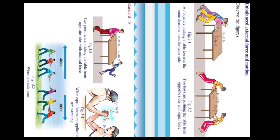Then listen to the third figure. In that, a person is pushing the table with 80 newtons, and another boy is pushing the table in the opposite direction with 40 newtons. So, 80 plus minus 40 — why? Because it is in the opposite direction.